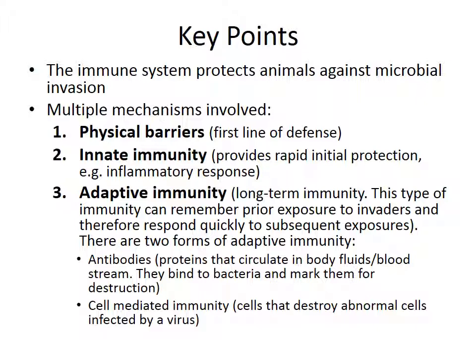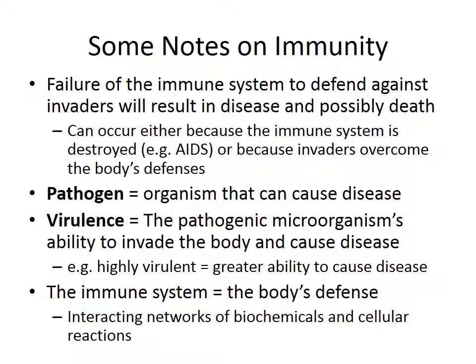There are two forms of adaptive immunity. One involves antibodies — proteins that circulate in the body fluids and bloodstream. They bind to bacteria and any pathogen invading the body, marking them for destruction. There's also cell-mediated immunity, which involves cells that destroy abnormal cells — cells infected by a virus or bacteria.